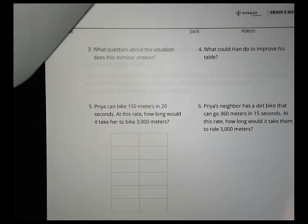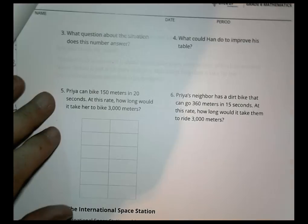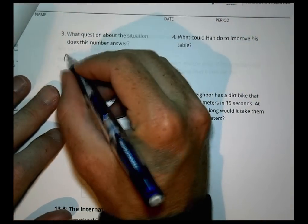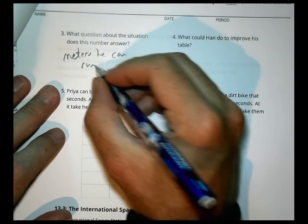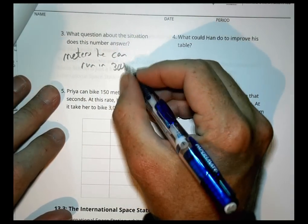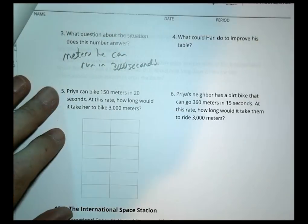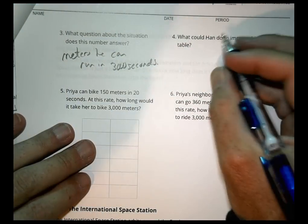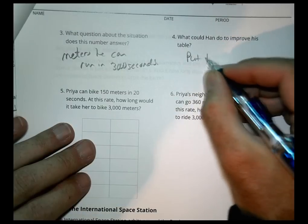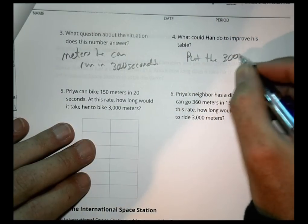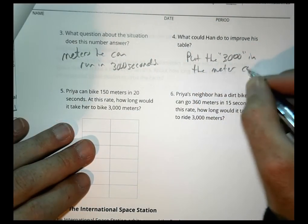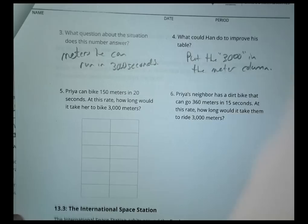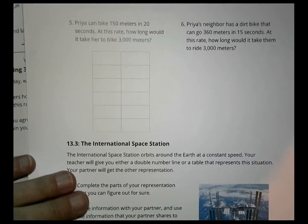We can look at 100 and say, do I know how to go from 100 to 3,000? Sure, 100 to 3,000 is multiplying by 30. 20 times 30 is 600. So it would actually take him 600 seconds to go 3,000 meters. What question does this number answer? It tells me how many meters he can run in 3,000 seconds. To improve his table, he could put the 3,000 in the meter column and then solve from there.